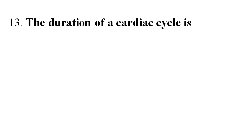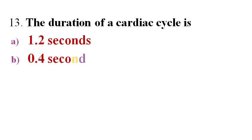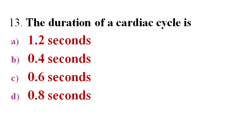Next question: The duration of a cardiac cycle is? Options A. 1.2 seconds, B. 4 seconds, C. 6 seconds, D. 8 seconds.